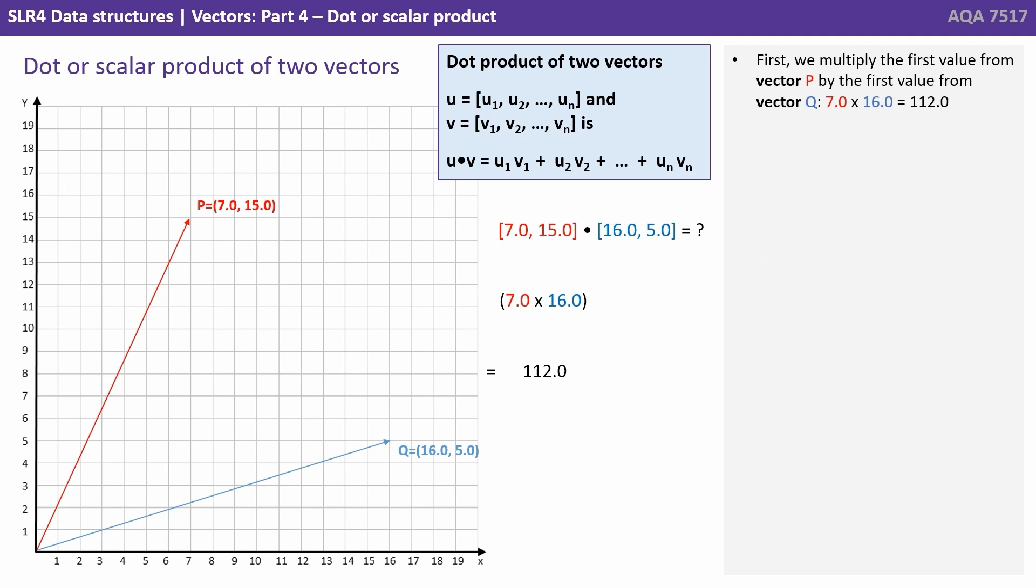First we multiply the first value from vector P by the first value from vector Q, so that's 7 times 16, which is 112.